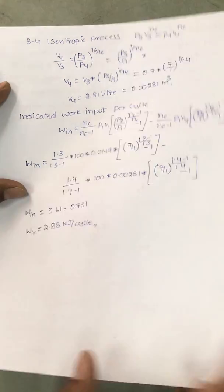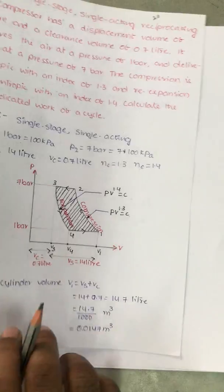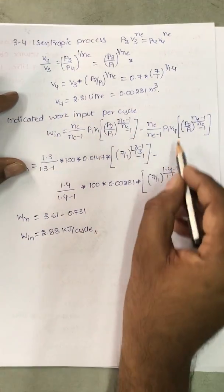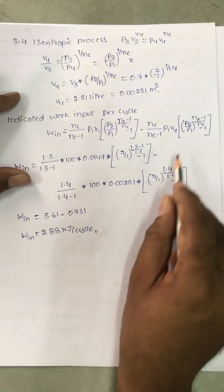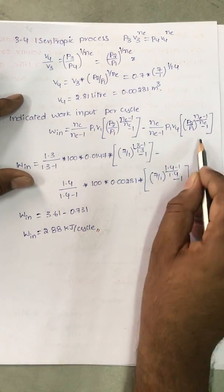P1 is 100, V4 - V4 is equal to 0.00281 - into 7 by 1 all power Ne 1.4 minus 1 by 1.4 minus 1.